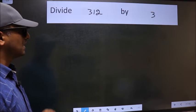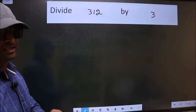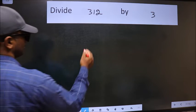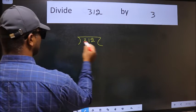Divide 312 by 3. To do this division, we should frame it in this way. 312 here, 3 here.